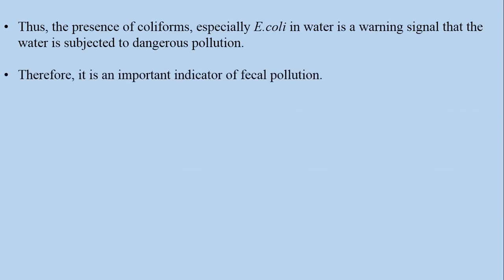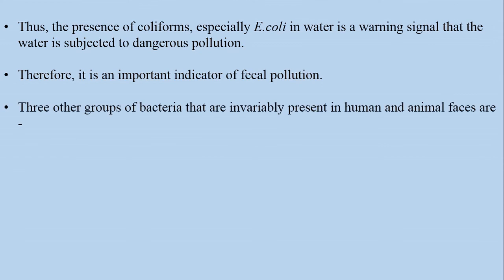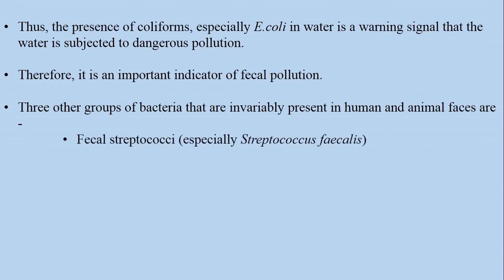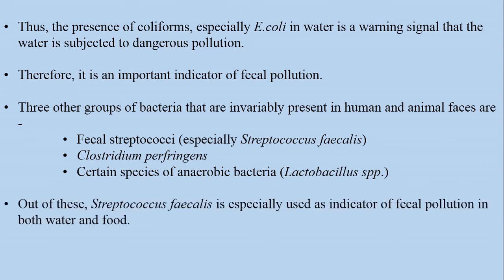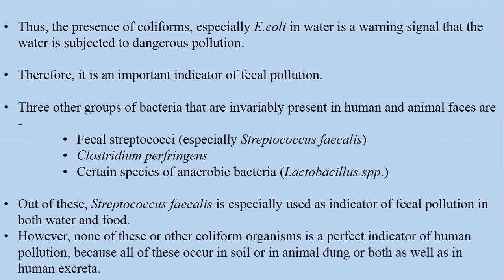There are three other groups of bacteria that are invariably present in human feces. They are fecal Streptococcus faecalis, Clostridium perfringens, and certain species of anaerobic bacteria, i.e., Lactobacillus species. Out of these, Streptococcus faecalis is especially used as an indicator of fecal pollution in both water and food. However, none of these or other coliform organisms is a perfect indicator of human pollution, because all of these occur in soil or in animal dung or both, as well as in human excreta.